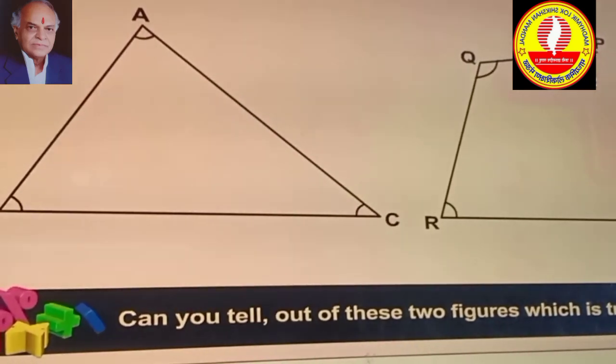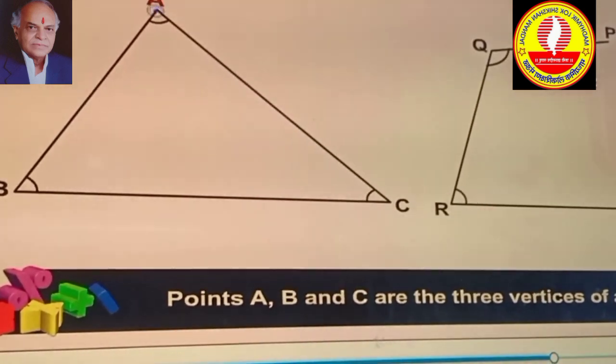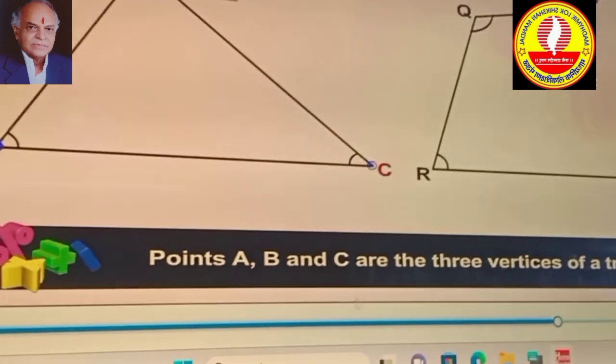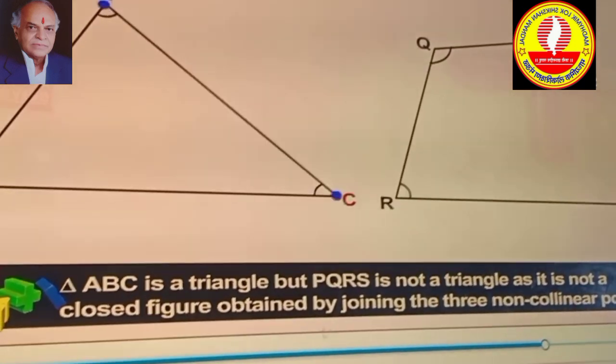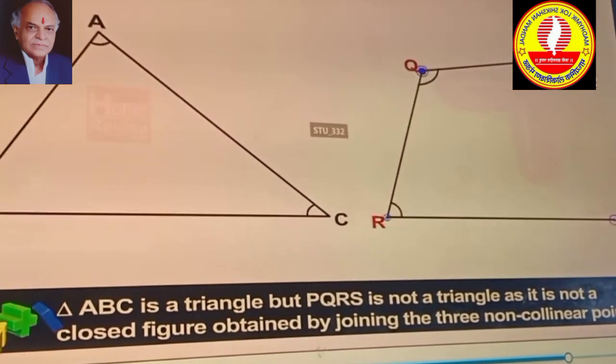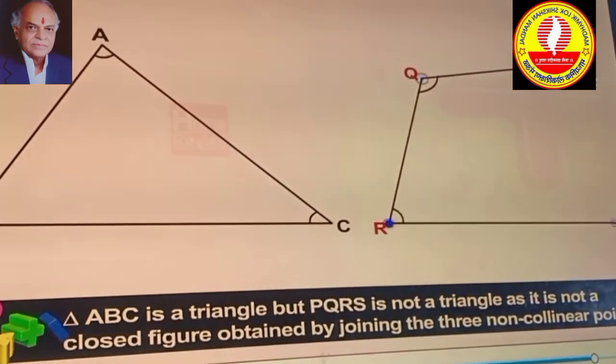Can you tell, out of these two figures, which is a triangle? Points A, B and C are the three vertices of a triangle. Triangle ABC is a triangle, but PQRS is not a triangle, as it is not a closed figure obtained by joining the three non-collinear points.